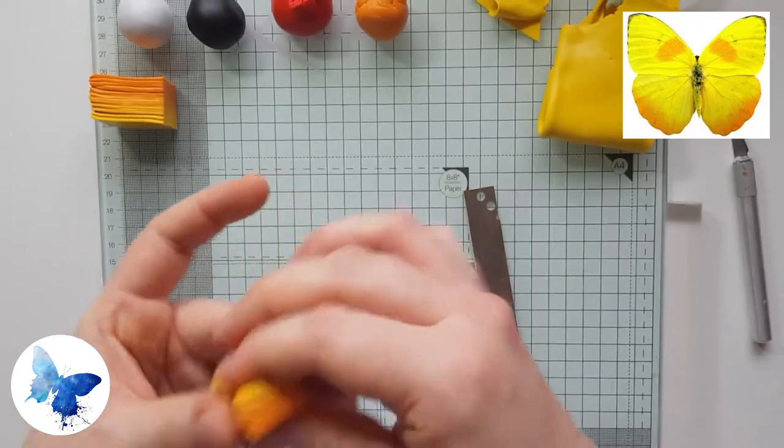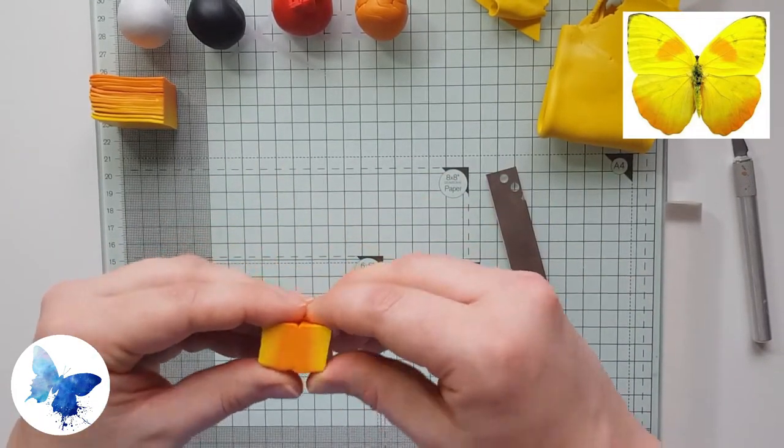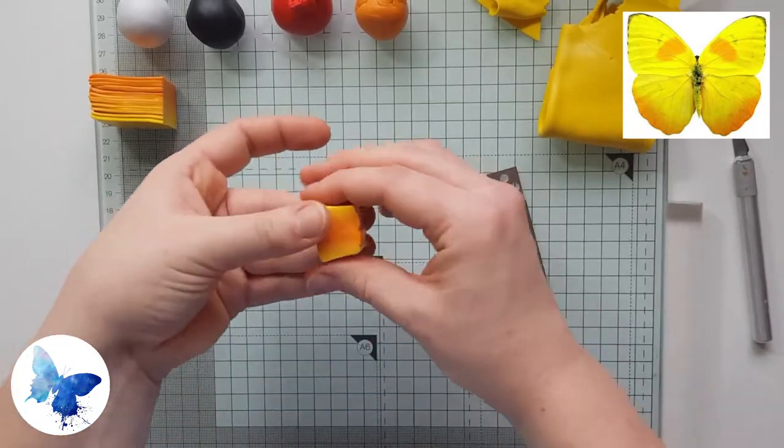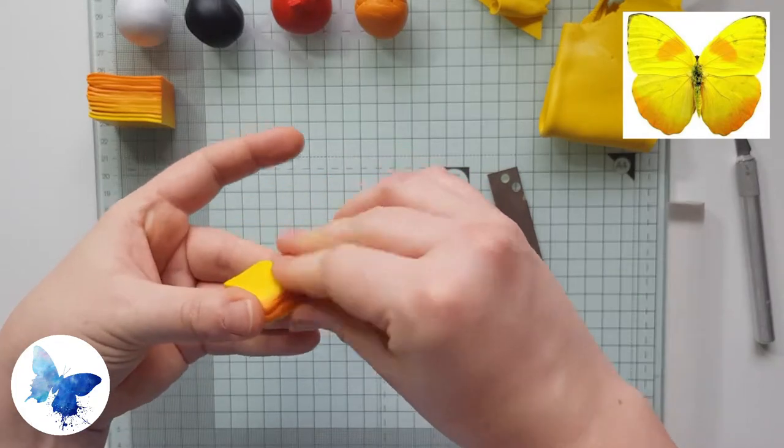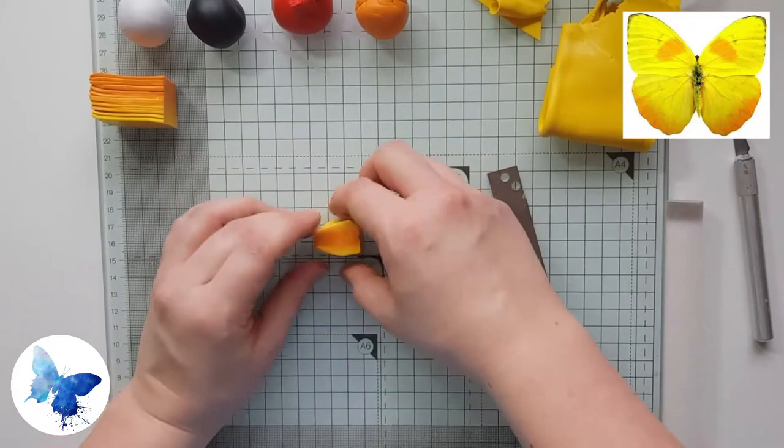Once we've squished it down so that it's about twice the length it was, we're going to cut it in half and then pop it dark side to dark side so we sort of have orange in the middle and yellow toward the outer edges. This is going to create the orange bar at the top of the butterfly wing so we're going to try and shape it.